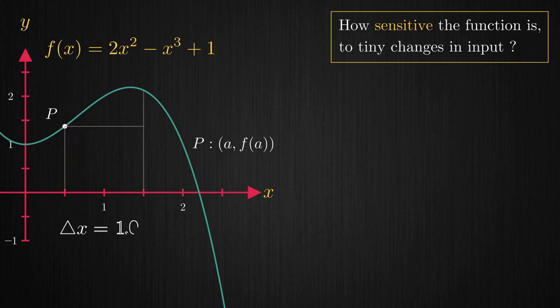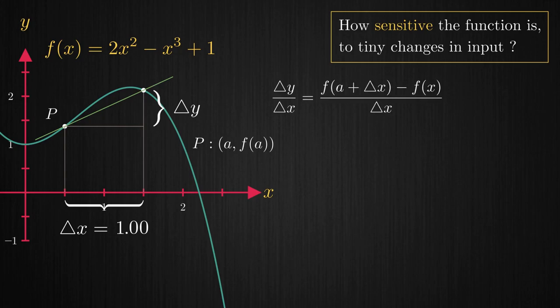let's say that a change in input by an amount Δx equals 1 causes the output to change by say Δy. Sensitivity at the point P can be seen as the rise over run slope Δy/Δx which after some algebra turns out to be this expression.